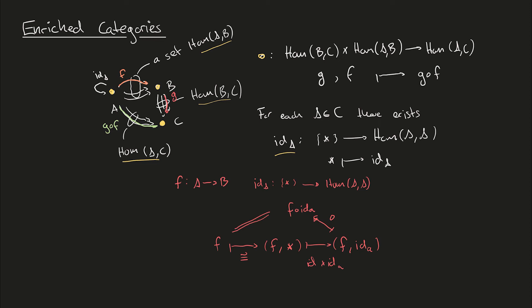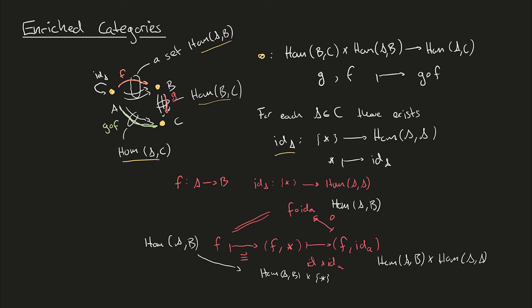Again we've looked at one particular element, but what we actually want is a diagram of hom sets to commute. On the left hand side f is in hom(a,b), and (f, star) is in hom(a,b) cross the singleton set. On the right we have a pair in hom(a,b) cross hom(a,a), and on the top we have the composition which is in hom(a,b). The maps used are this isomorphism, identity cross the map identity-at-a, and composition. We want equality on the top.